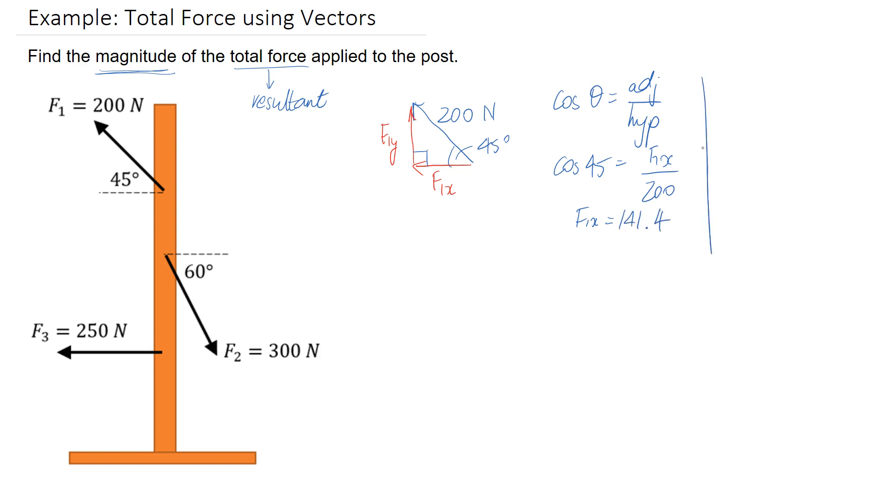So we can now go ahead and do sine in order to work out the length of the other side. We know that sine is equal to the opposite divided by the hypotenuse. So focusing on our angle of 45 degrees, the opposite to it is the F1y, and the hypotenuse is still 200. So if we do 200 times sine of 45, what we end up with is again actually 141.4 as a decimal approximation for its length.